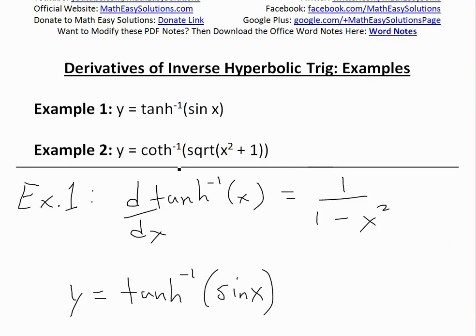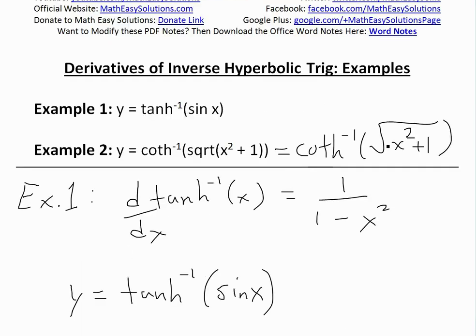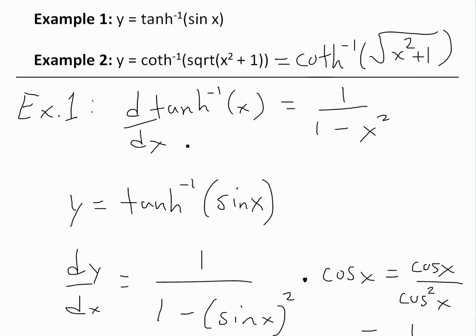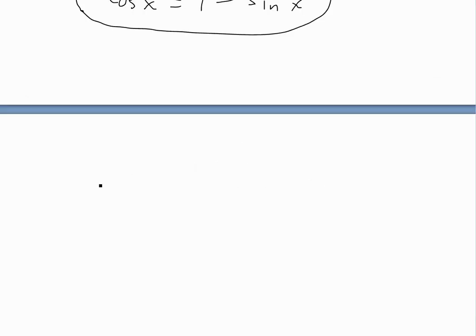Now question 2 is: y equals inverse hyperbolic cotangent of square root of x squared plus 1. This is the same as inverse hyperbolic cotangent of square root of x squared plus 1. We can do the same thing using the chain rule, and I'll have to apply it a couple of times.